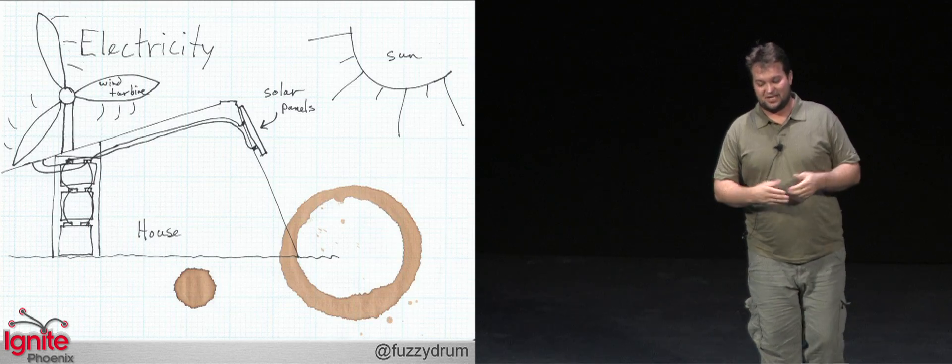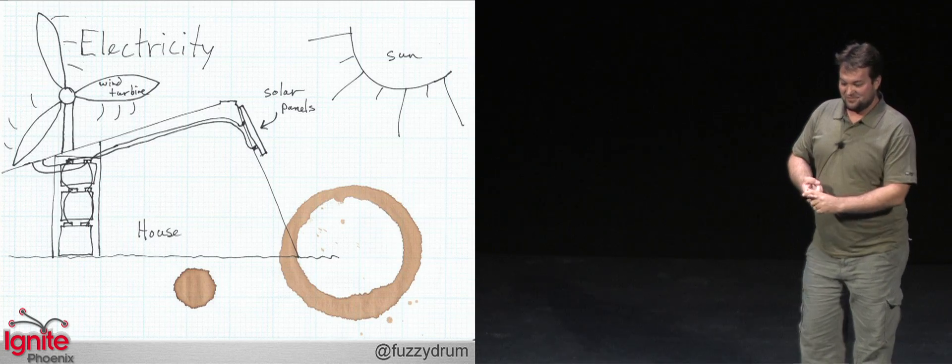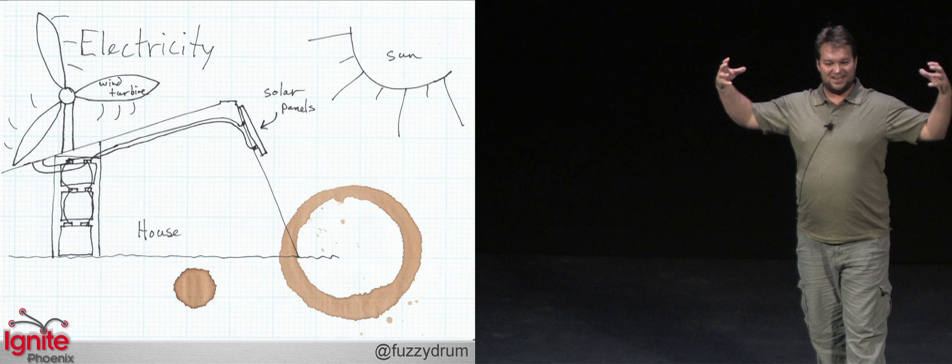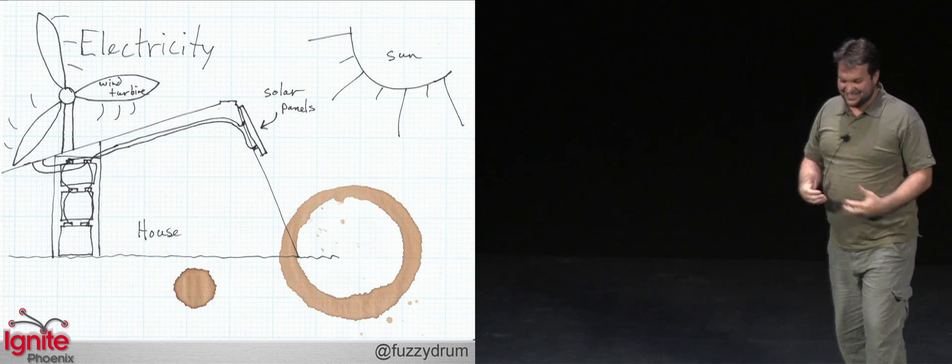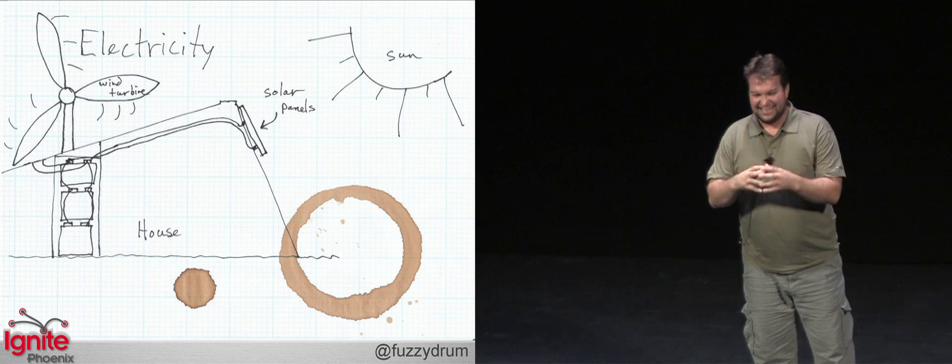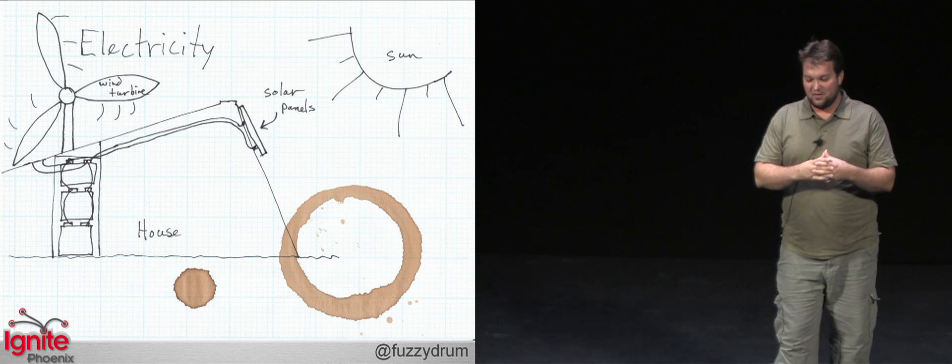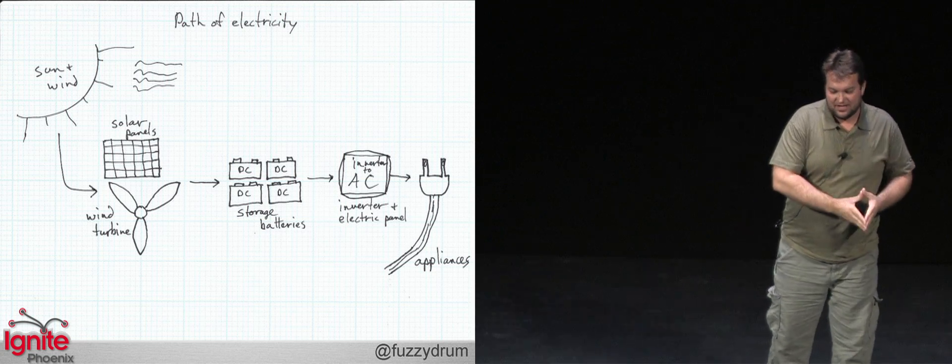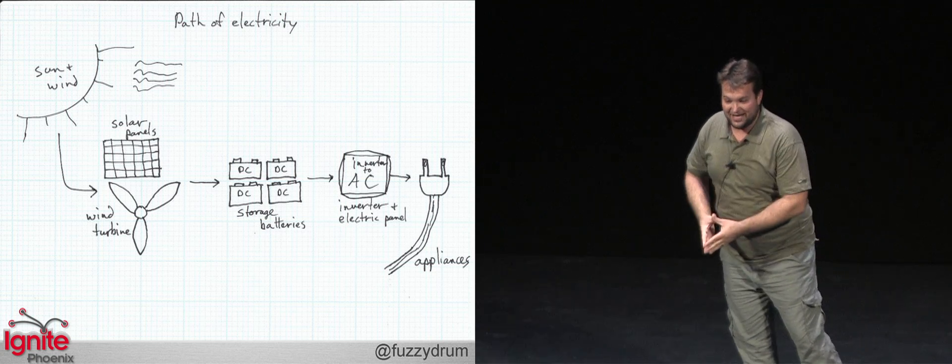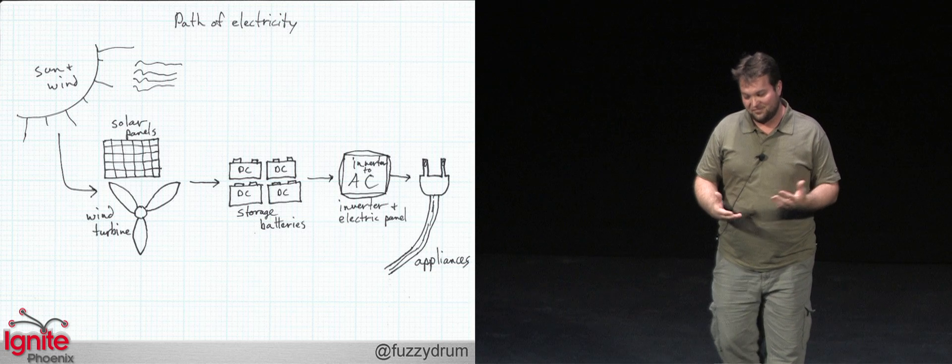Next, you're going to need some electricity. You're going to get that from the wind, you're going to get it from the sun, and the sun is going to gather that electricity into some batteries. I know, hilarious, right? Into these batteries. The batteries will then go into an inverter because you have to have direct current converted into an alternating current for you to use with your normal 120 volt appliances.